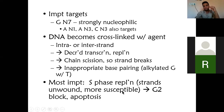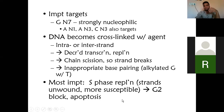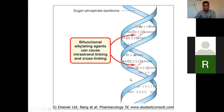This generally blocks the S phase and G2 phase of the cell cycle, causing cell arrest. The cross-links from bifunctional alkylating agents prevent proper transcription and replication. This is what we were showing in the previous slide — improper pairing that should not happen, and bifunctional alkylating agents can cause this.